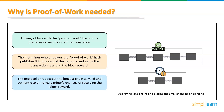The protocol only accepts the longest chain as valid and authentic. A fake chain is impractical in the long run since a miner's chances of receiving the block reward are minimal, and other miners will continue to extend the valid chain quicker than a tampered chain over time.